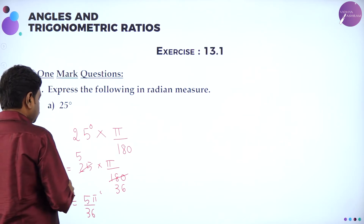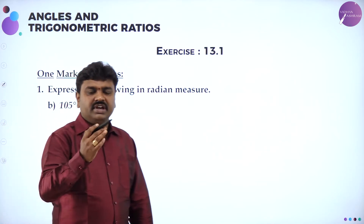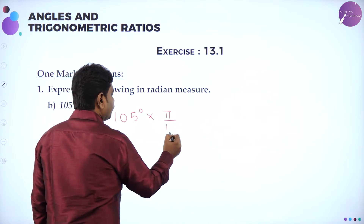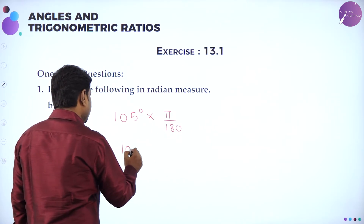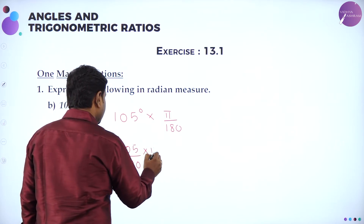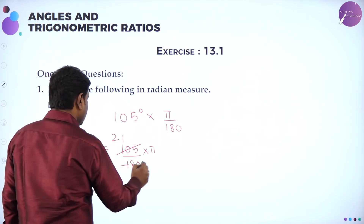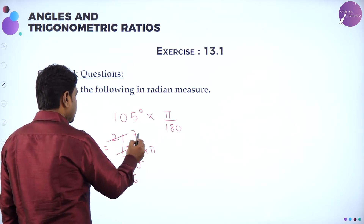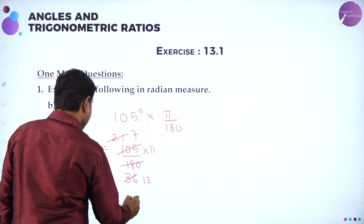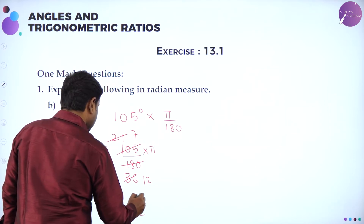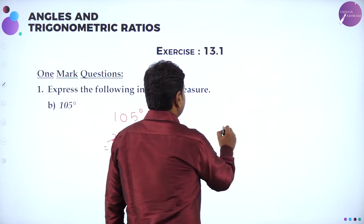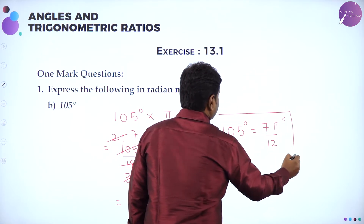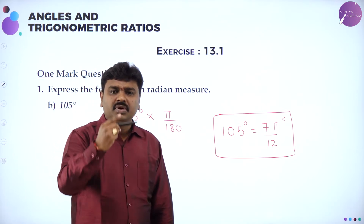Next, 105 degrees. To convert 105 degrees to radians, multiply by pi/180. That gives 105/180 times pi. Dividing: 5 goes into both, then 3 goes into both, giving 7/12. So 105 degrees equals 7pi/12 radians. To convert degree to radians, always multiply by pi/180.